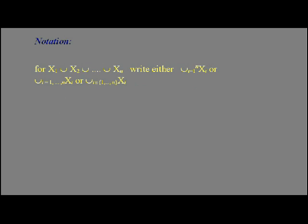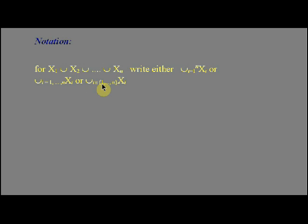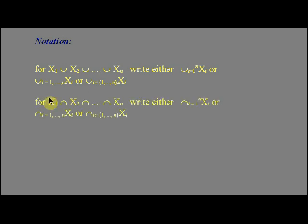For large strings of unions — the unions of large numbers of sets X1, X2, up to X sub N — we might use familiar notation to write those more simply: the union from i equals 1 to N of X sub i. Or we might write union i equals 1 through N of X sub i. This is just a convenient form of notation for writing unions, or indeed intersections, when those operations are applied to a large number of sets.